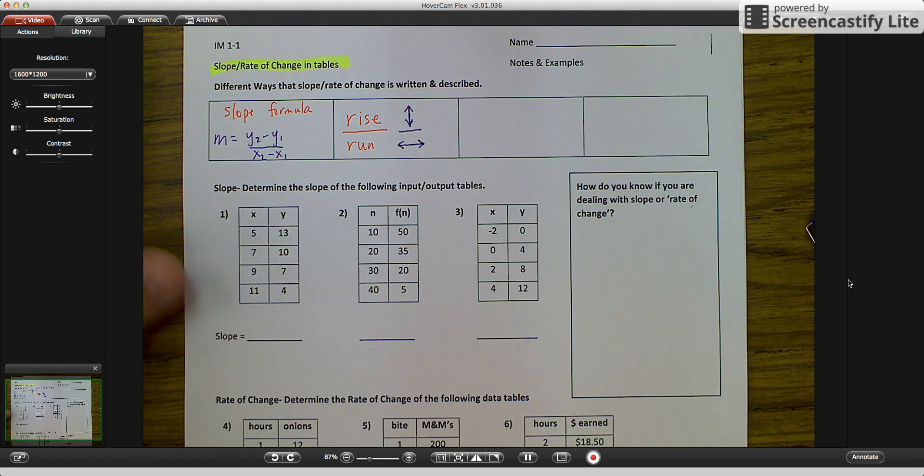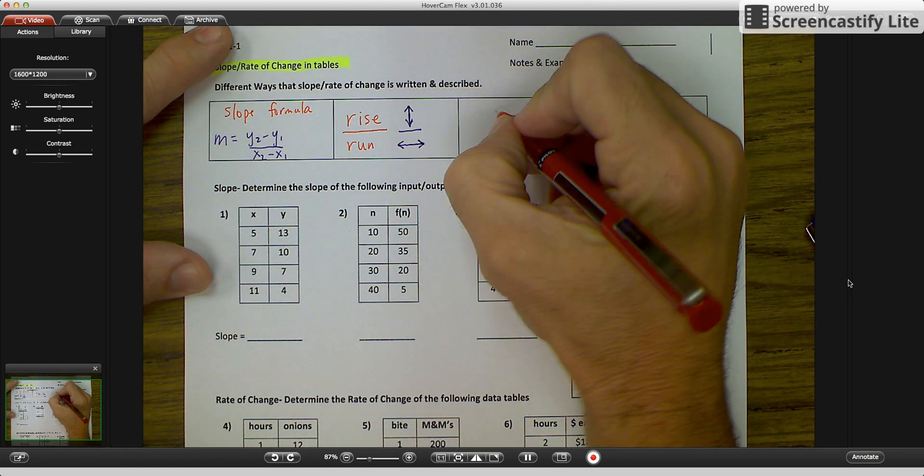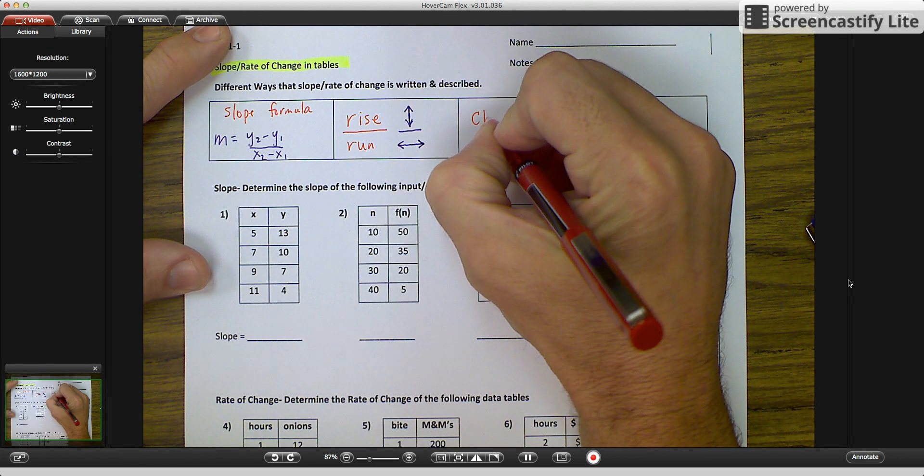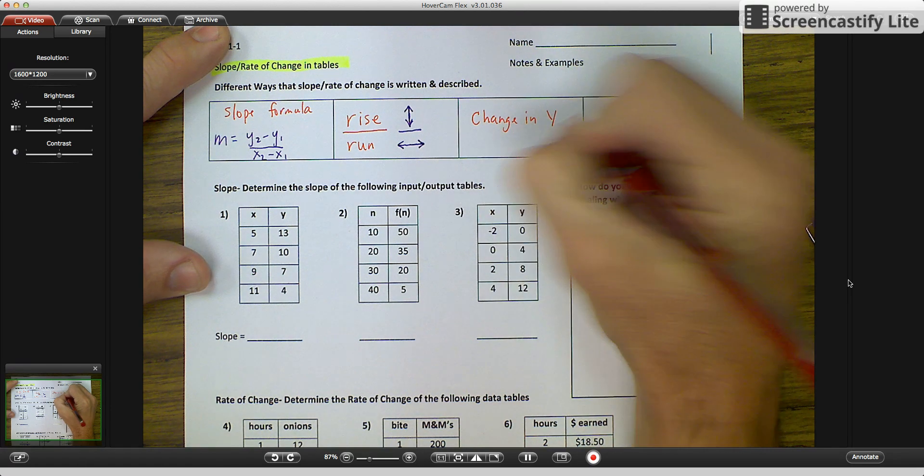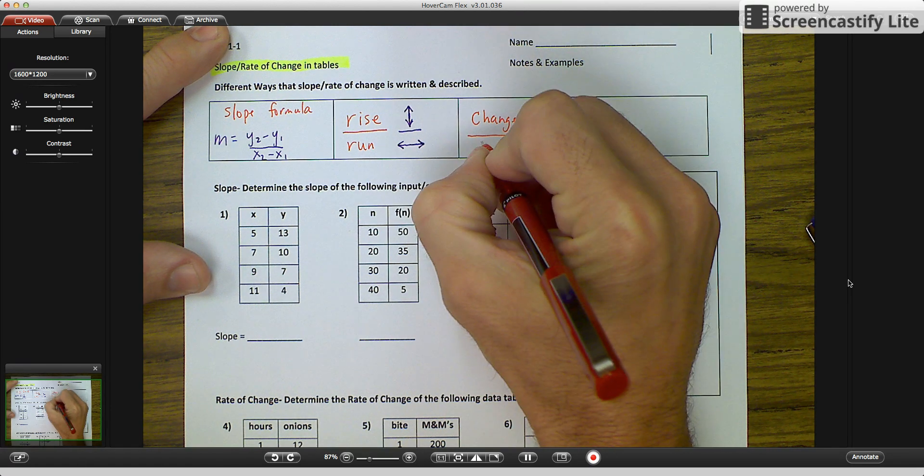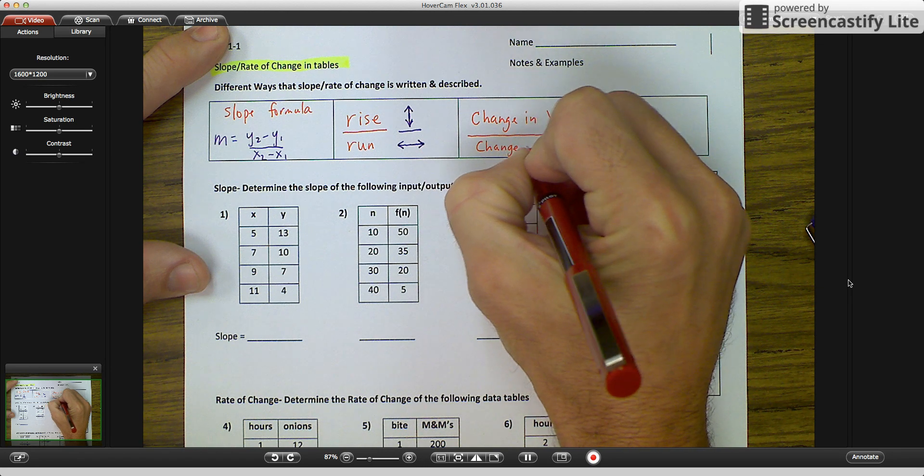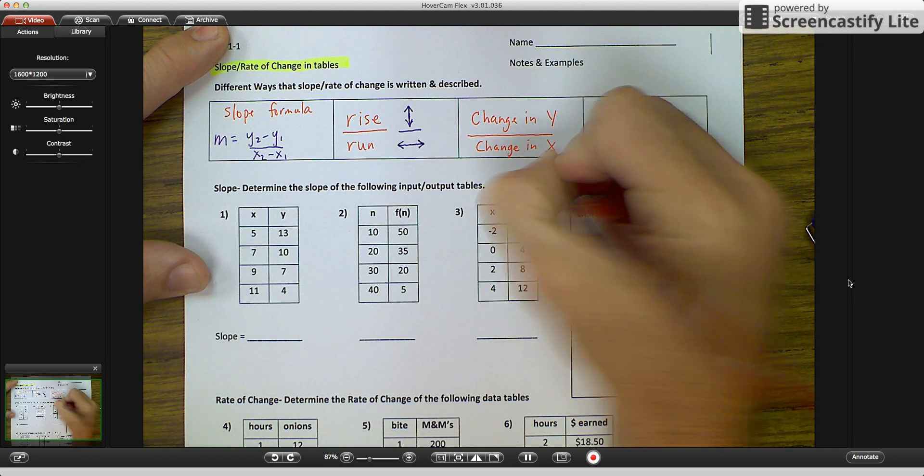Another way that we're going to describe it is exactly that. We're just going to say that it's really the change in your y values over the change in your x values.